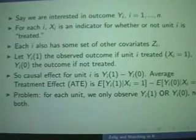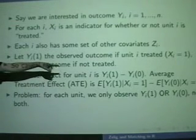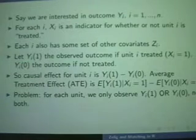For each person in this study, even if you have a randomized control trial, you don't get to treat someone and not treat someone. You only get to do half of it. And so in a sense, this causal effect for each unit, Y_i(1) minus Y_i(0), it's an unobservable quantity.